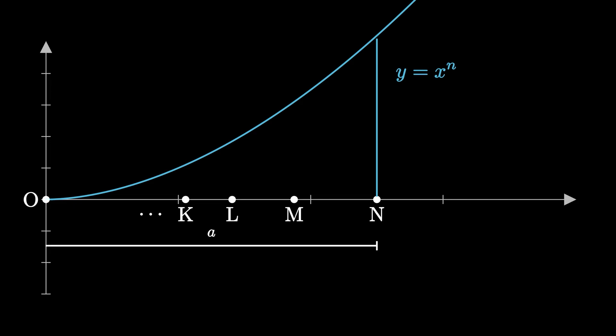Then, starting from n and working right to left, each successive subinterval will form a decreasing geometric progression. So, om will be a times r, where r is a common ratio and r is less than 1. Then, ol will be ar squared, then ok is a r cubed, and so on and so forth.